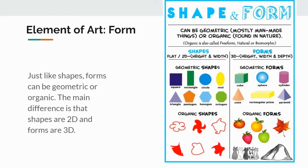Now we're going to look at the remaining elements of art. In the previous lesson we looked at line, shape, and space. The last series of elements of art include form, value, texture, and color.